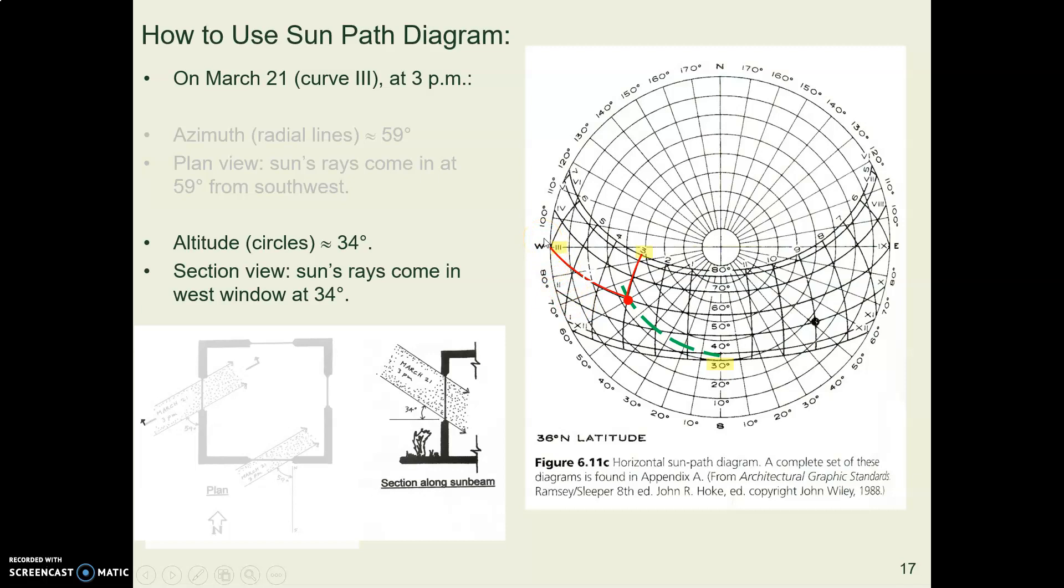So looking at our sun path diagram again, here again is our back and forth line for month three. March is the third month. Here is our up and down line looking at three, three o'clock in the afternoon. And where they intersect these altitude circles is in between the 30 degree circle and the 40 degree circle, maybe not quite halfway. Maybe the altitude is about 34 degrees.